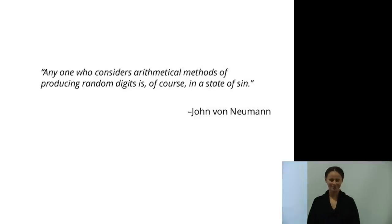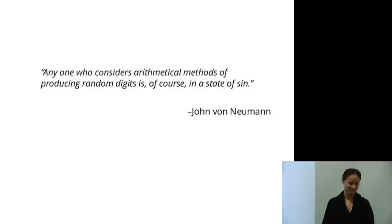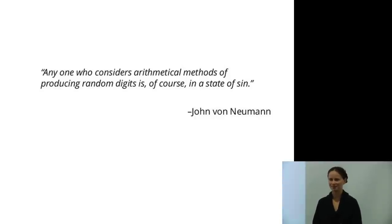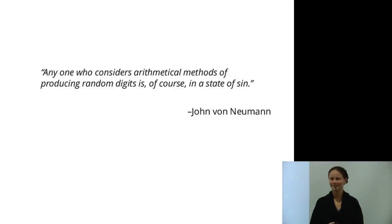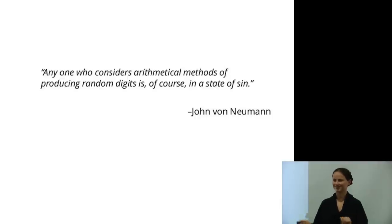I'll start with this quote from von Neumann: 'Anyone who considers arithmetical methods of producing random digits is, of course, in a state of sin.' What he was saying is that a deterministic method of generating randomness — which is what we need to use in cryptography — is not actually random. It's by definition a deterministic method, and so you are buying yourself into a world of pain. But of course this is what all of modern cryptography is based on.